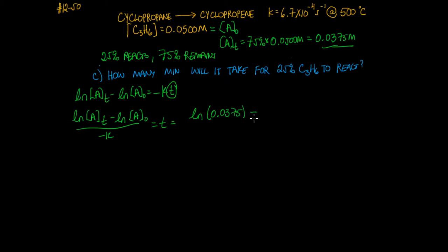And initially, we have 0.0500 molarity. That's all divided by minus the rate constant, which is 6.7 times 10 to the minus fourth. That has units of per second.